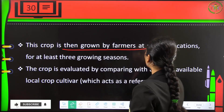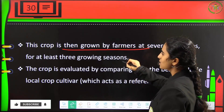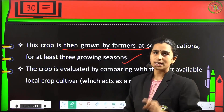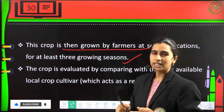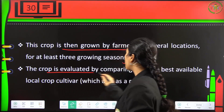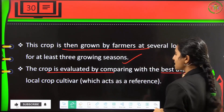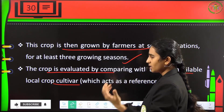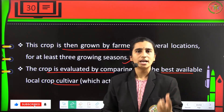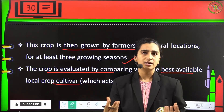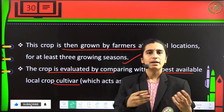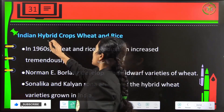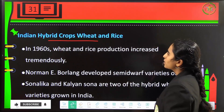The crop is then grown by farmers at several locations for at least three growing seasons to check whether it yields properly. This crop is evaluated by comparing with the best available local crop cultivars, which act as a reference standard. If it performs well against that standard, it is then released to the market.